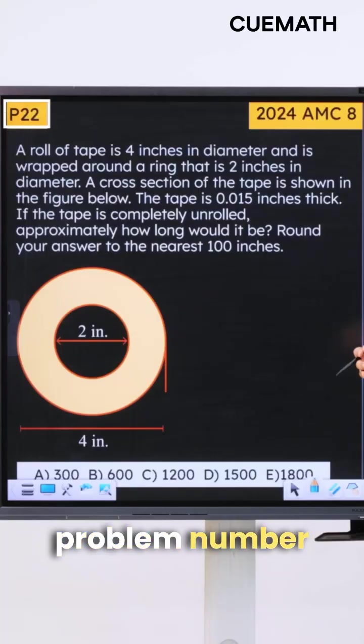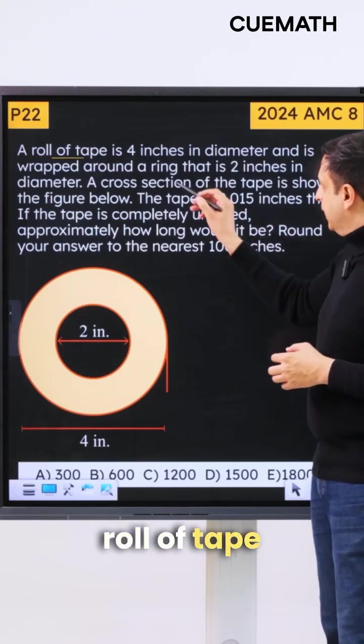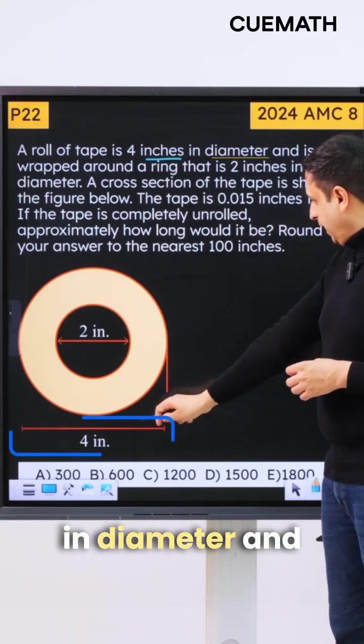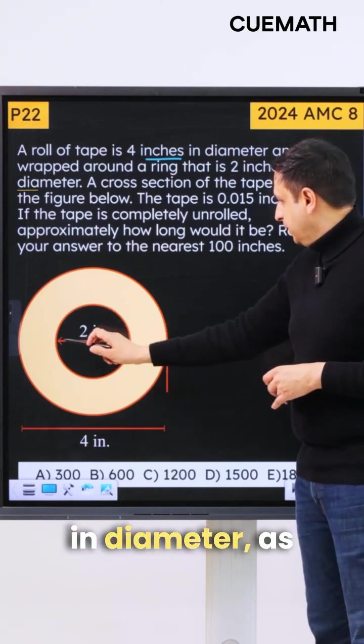Now we're going to work out problem number 22, which is actually a pretty awesome problem. It says a roll of tape is 4 inches in diameter and is wrapped around a ring that is 2 inches in diameter, as you can see here.